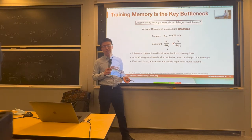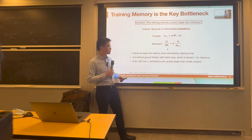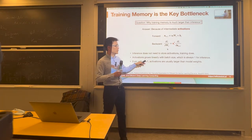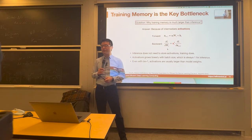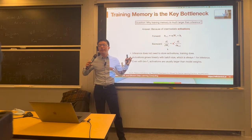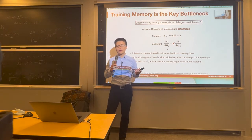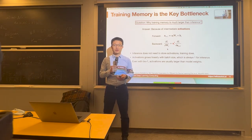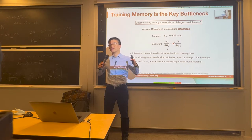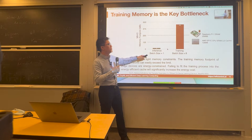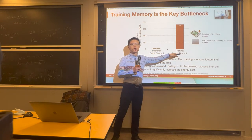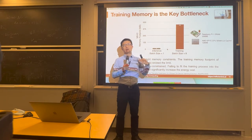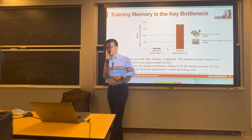For real-time inference, the batch size is always 1. Usually those activations, due to the large resolution of a pretty big image, can get quite large, especially for the first couple of stages where you have high resolution before downsampling. That's the reason why training is more challenging than inference and consumes a lot more memory.